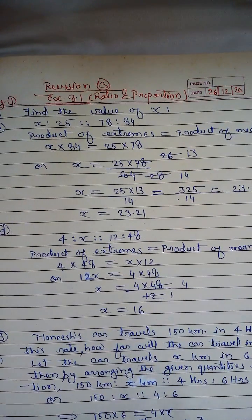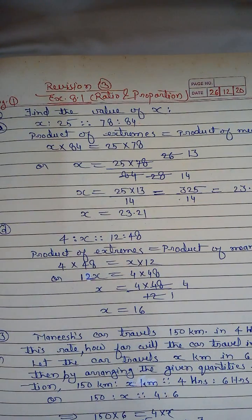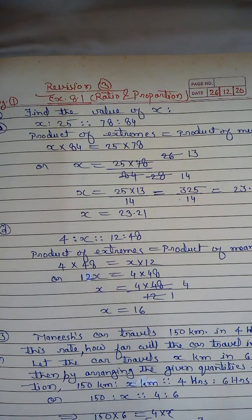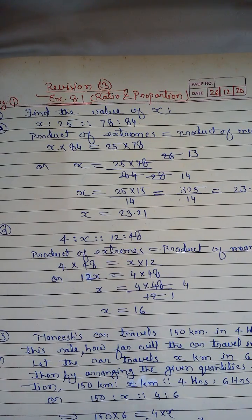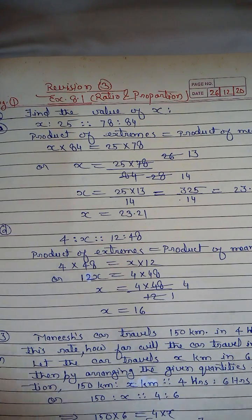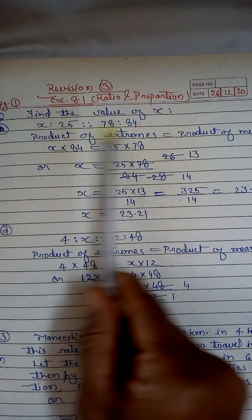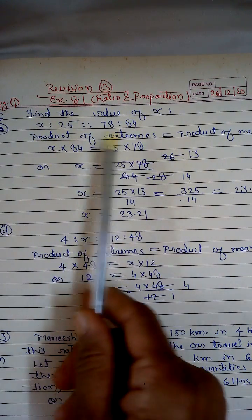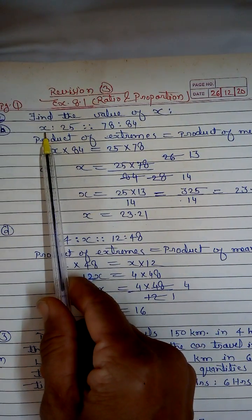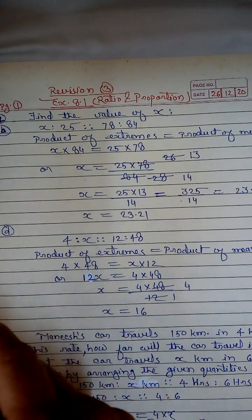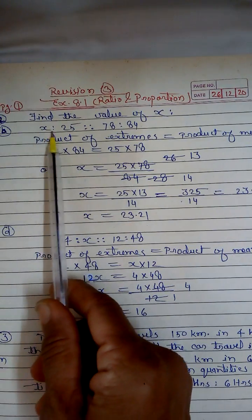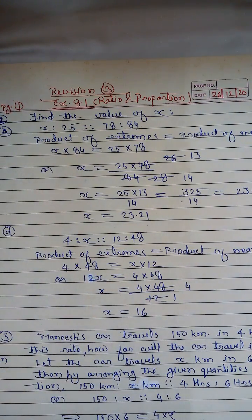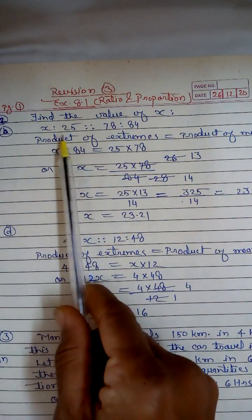In Revision 3 we are going to see some questions of Exercise 8.1, which includes questions on ratio and proportion. The first question is: find the value of x. Here a proportion has been given to us in which one of the numbers is missing, that is x, and we have to find out the value of x.